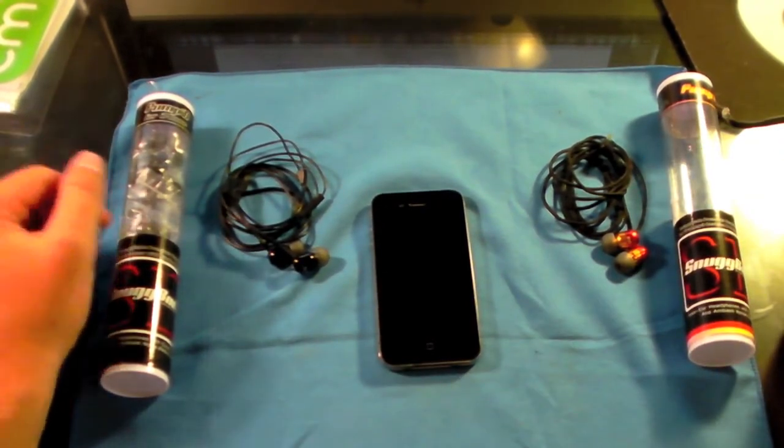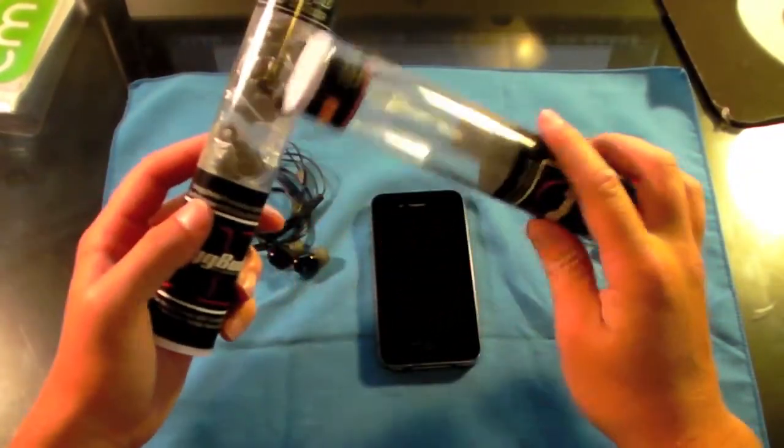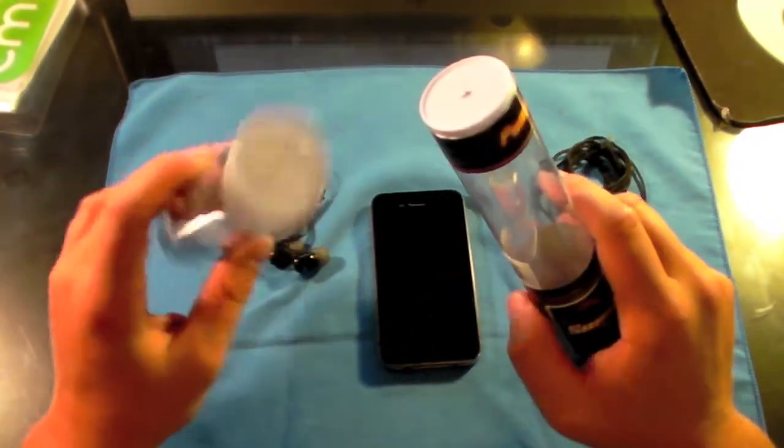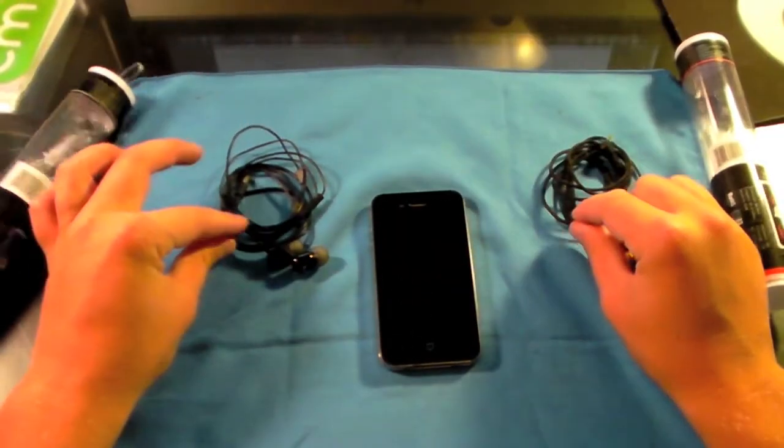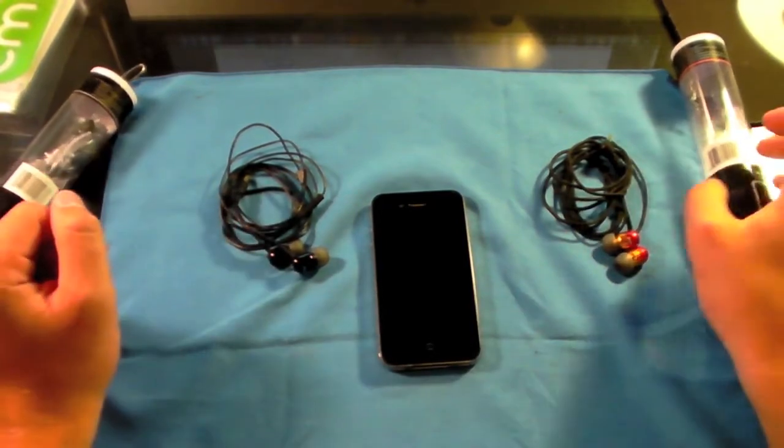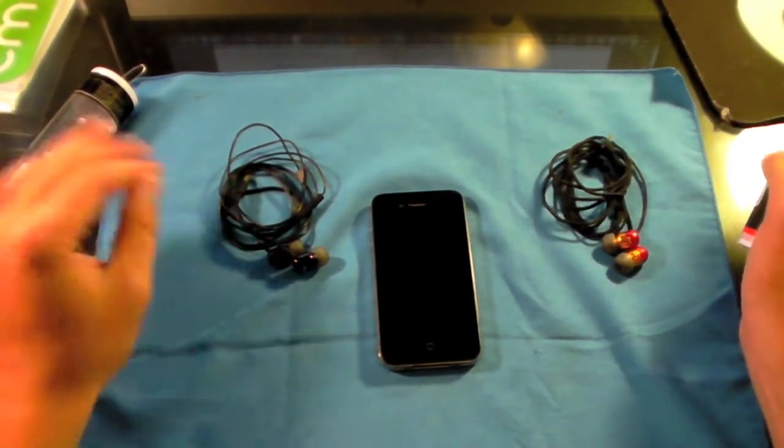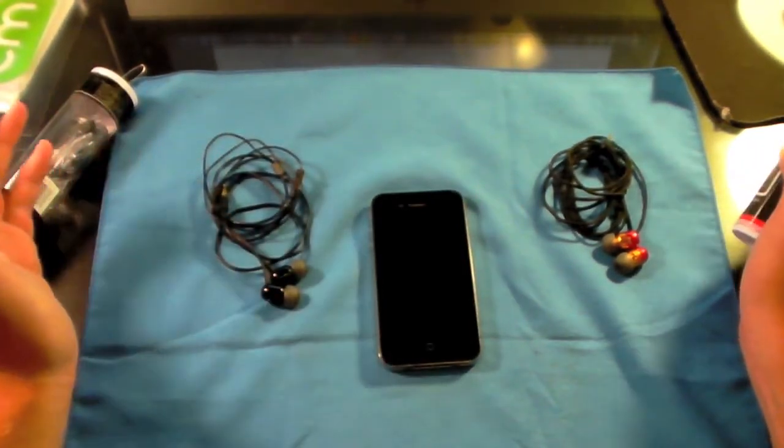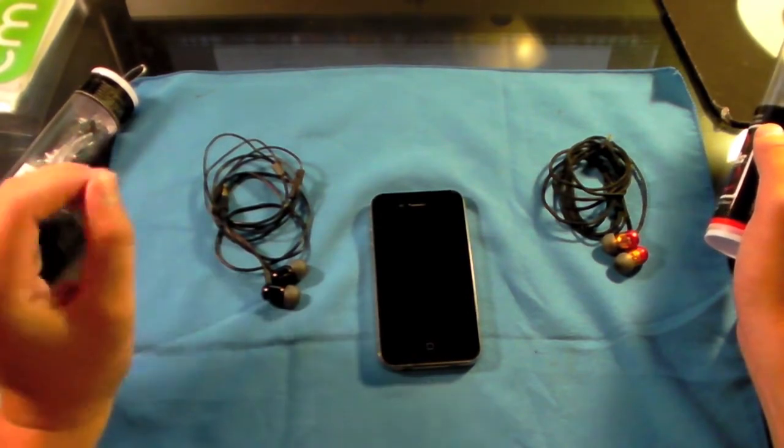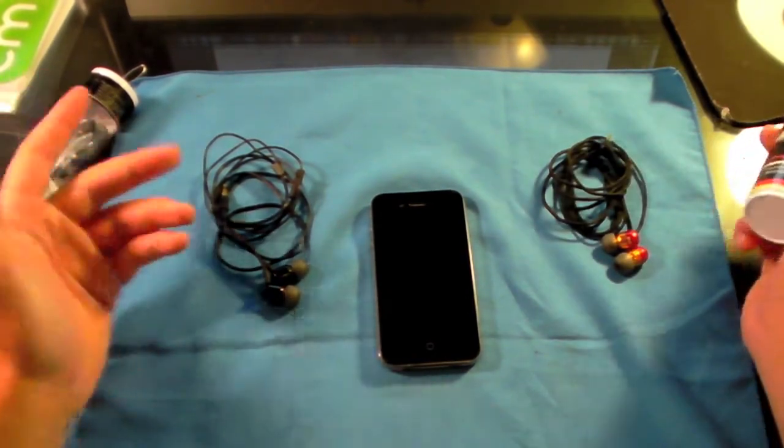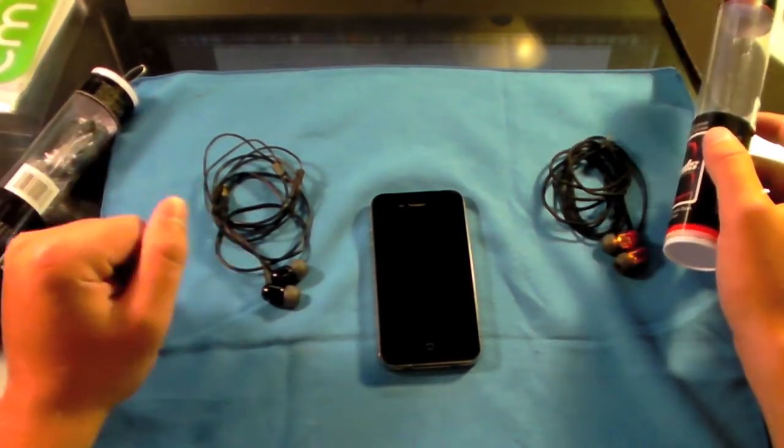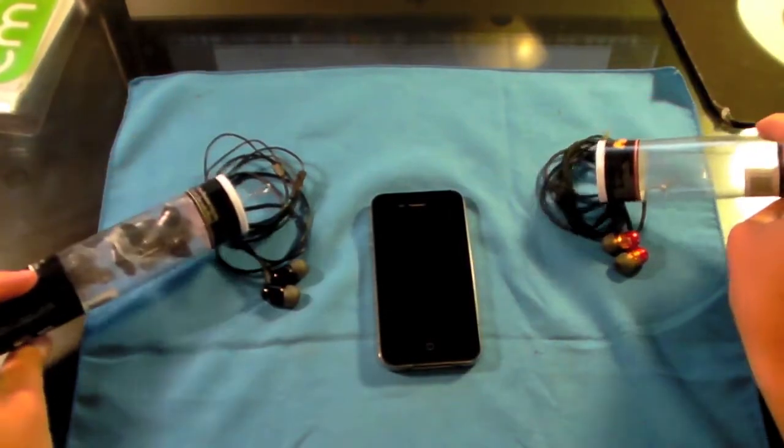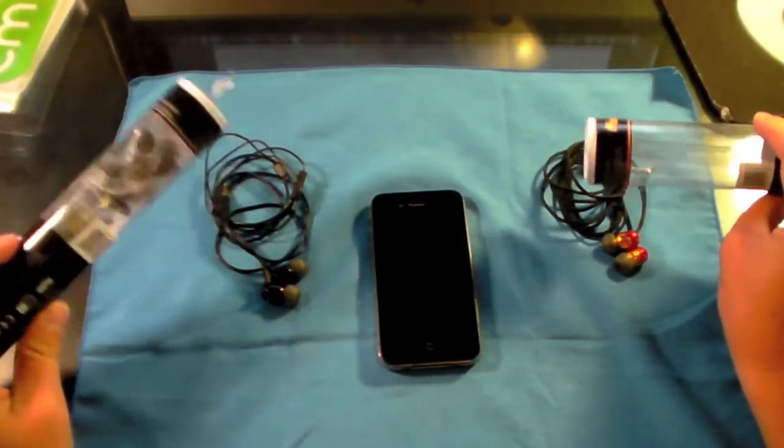They come in these cool little tubes when you buy them. All that stuff in there is just extra ear bits that I decided to keep in here. They also all come with an inline clip. If you watched my other Snug Buds review, the clip did not break off on these headphones, but I'm just not a fan of clips so I took it off myself. The clip is definitely good quality.